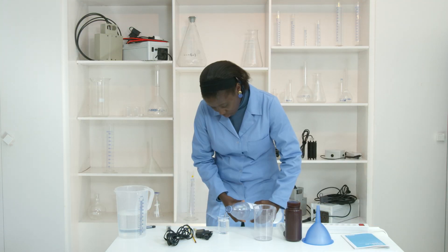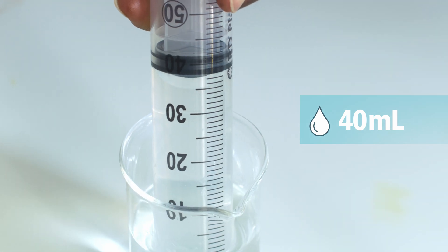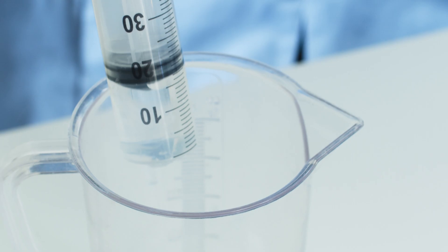To prepare the solution to be electrolyzed, take 40 milliliters of saturated brine and empty it into the graduated beaker.